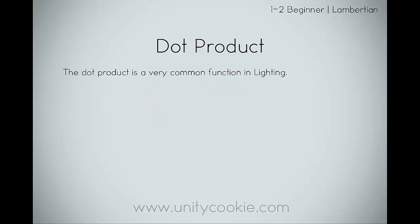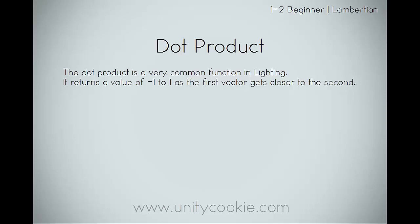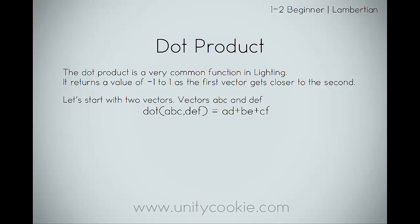The dot product is a very common function in lighting and we'll be using it a lot. When I first learnt how to write shaders, I wrote many shaders before I even knew what the dot product was doing. What it does is it returns a value of negative 1 to 1 as the first vector gets close to the second. Starting with two vectors ABC and DEF, the dot product of ABC and DEF is A times D plus B times E plus C times F, returning a value of negative 1 to 1.